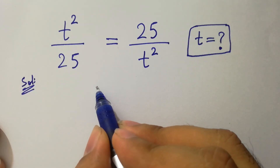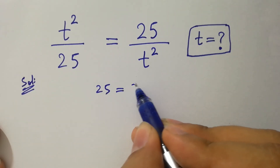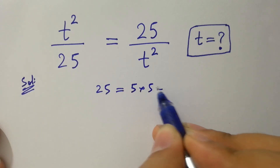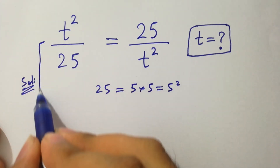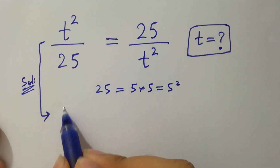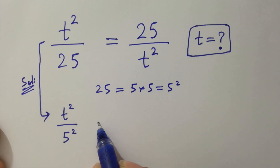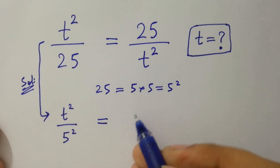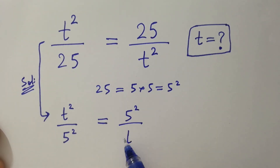Since 25 equals 5 times 5, which is 5 squared, then it will be t squared over 5 squared equal to 5 squared over t squared.